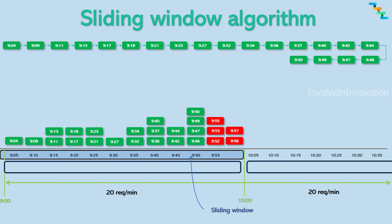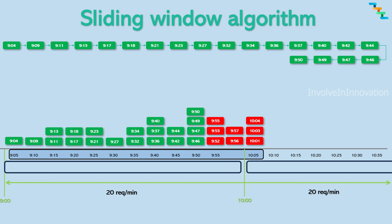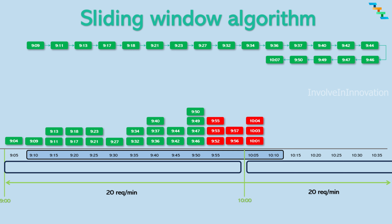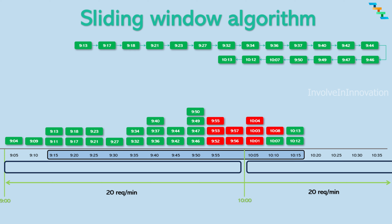Seven more requests are also rejected because they fall in the same window range. When a new request comes in at 10 minutes 7 seconds, we check the linked list head: the head at 9 minutes 4 seconds is not in the sliding window range, so it is removed. Now there are only 19 requests in the period range, so the new request is accepted and the timestamp is added to the tail of the linked list. The animation runs for some more requests to give further clarity about the sliding window algorithm.